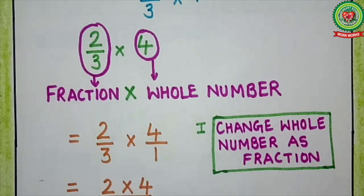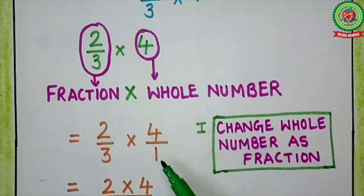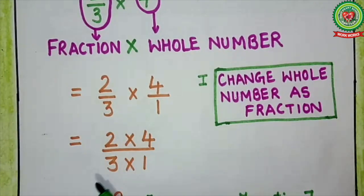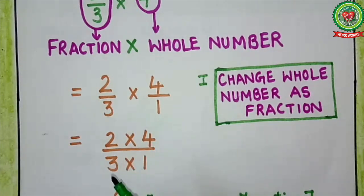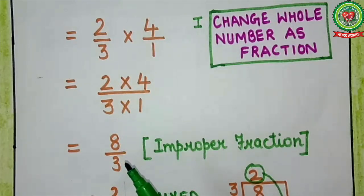Now Step 2: cutting — up, down and cross. Here 2 and 3, cutting is not possible. We will not check cutting by 1. Now 4 and 3, again cutting is not possible. And 4 and 1, we will not check cutting by 1. So cutting is not possible here. Then we apply Step 3: numerator multiply by numerator, denominator multiply by denominator. So it will come: 2 multiplied by 4 upon 3 multiplied by 1. 2 fours are 8, 3 ones are 3.